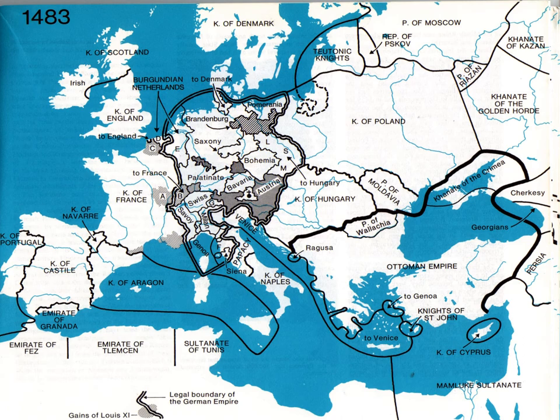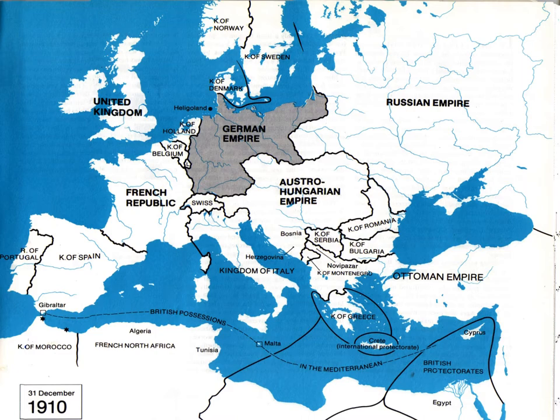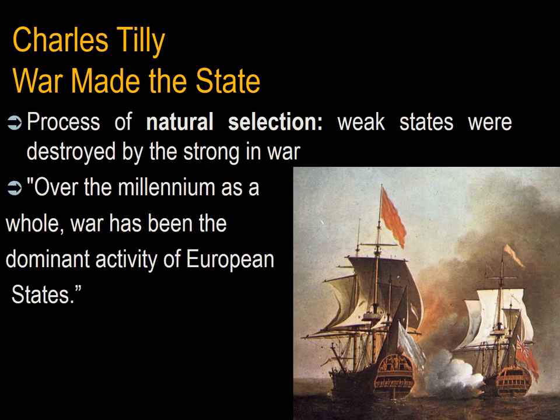You can see here Europe in 1483. Even this understates the hundreds of smaller independent principalities and city-states present within the Holy Roman Empire — basically represented in the center of the map, what is today Germany. And this is Europe in 1910. Tilly argued that through a process of natural selection, in which weak states were destroyed by the strong in numerous ways, only the strongest states survived.